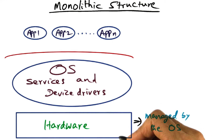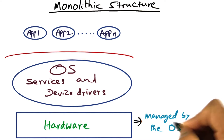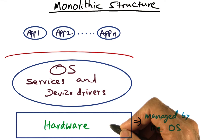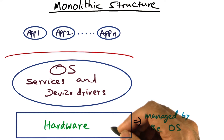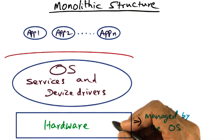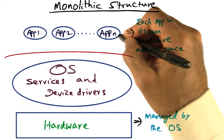You have the hardware at the bottom, which is managed by the operating system. Hardware includes the CPU, memory, peripheral devices such as the network and storage, and so on.